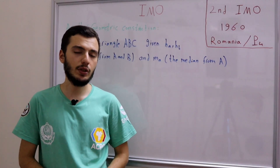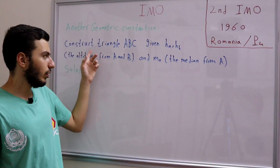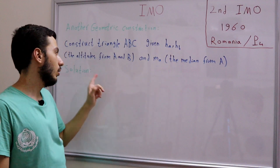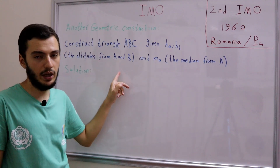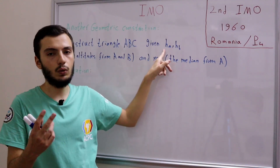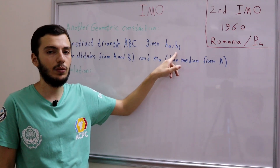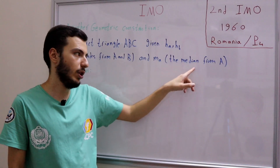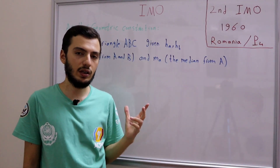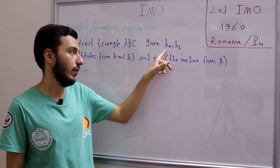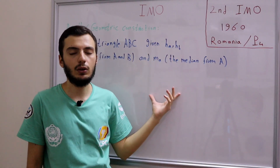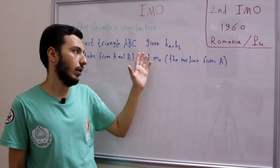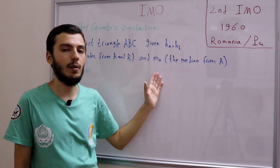The problem statement is as follows: construct triangle ABC given HA and HB, which are the altitudes from A and B. We know the values of the altitude from A, the altitude from B, and also the median MA — the median from A. So they've given us three values: HA, HB, and MA, and they want us to construct triangle ABC using these three values.